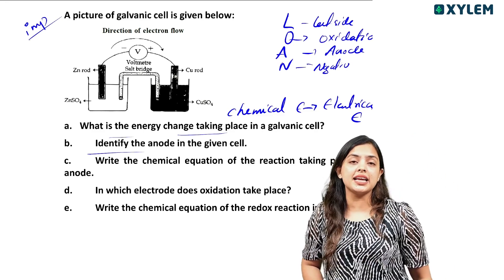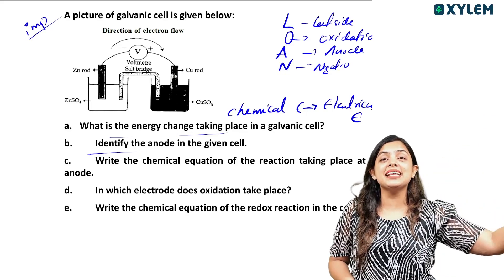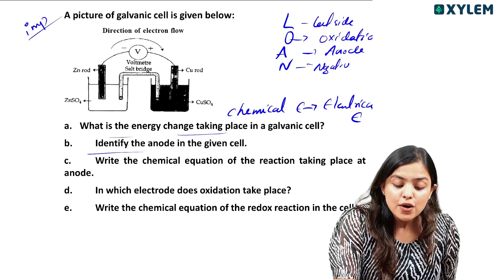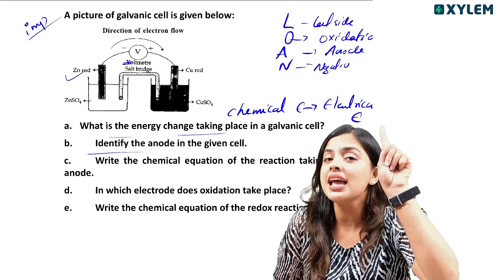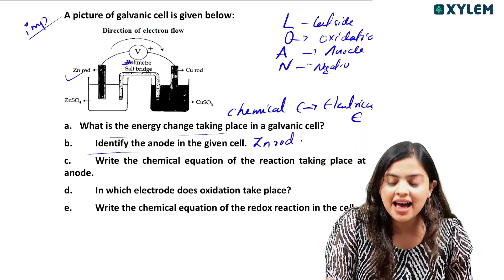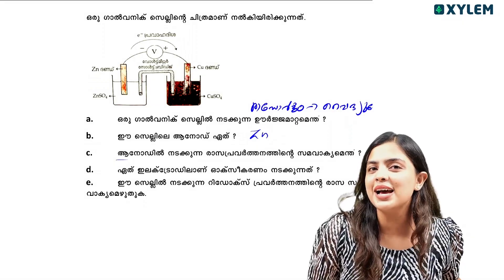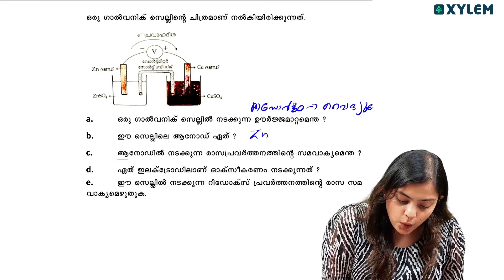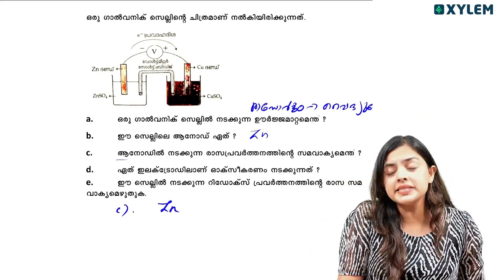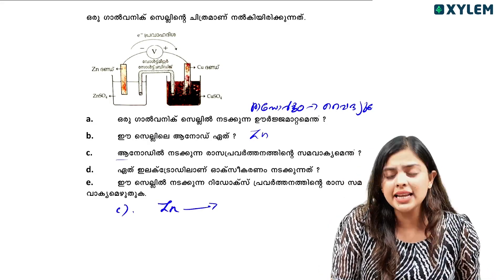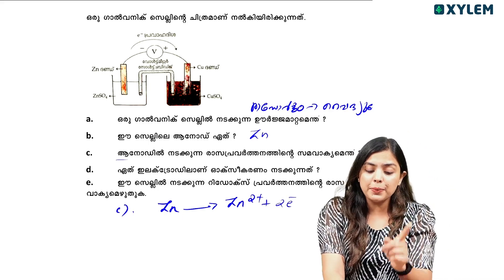Anode is a negative charge. This is how much oxidation is used — it is oxidation. Electrons are positive and negative. So Zn gives Zn2+ plus 2e⁻.